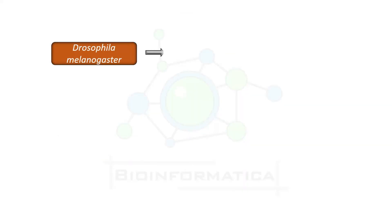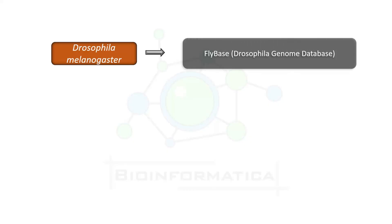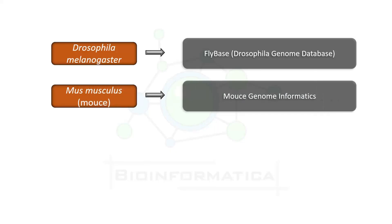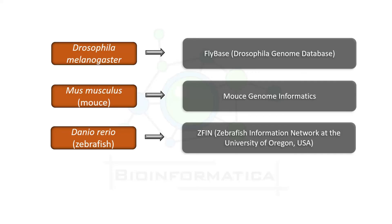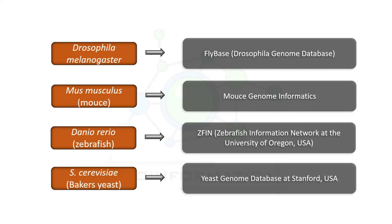For Drosophila melanogaster, the database is FlyBase — the Drosophila Genome Database. For mouse (Mus musculus), it is Mouse Genome Informatics. For zebrafish (Danio rerio), it is ZFIN — Zebrafish Information Network — at the University of Oregon, USA. And last, for Baker's yeast, it is the Yeast Genome Database at Stanford, USA.